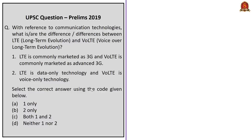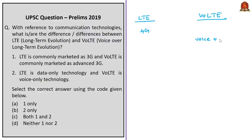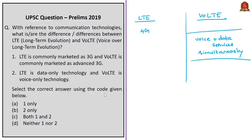This is a previous year question with reference to communication technologies: 'What is the difference between Long Term Evolution (LTE) and Voice over Long Term Evolution (VoLTE)? LTE is commonly marketed as 3G and VoLTE is commonly marketed as advanced 4G.' The first statement is incorrect because LTE is commonly marketed as 4G, not 3G. VoLTE is an advanced version over LTE. LTE does not provide good quality voice calls while using data services. On the contrary, VoLTE allows users to make voice calls even while using data services without changing voice quality. Both are data communication systems, but VoLTE always supports data and voice call services simultaneously, while LTE may not. VoLTE supports HD quality voice calling and does not turn off data connection while making voice calls, whereas LTE turns off data while making voice calls.